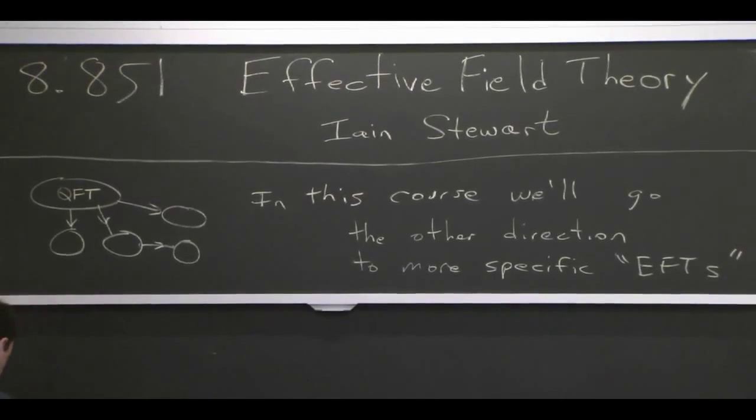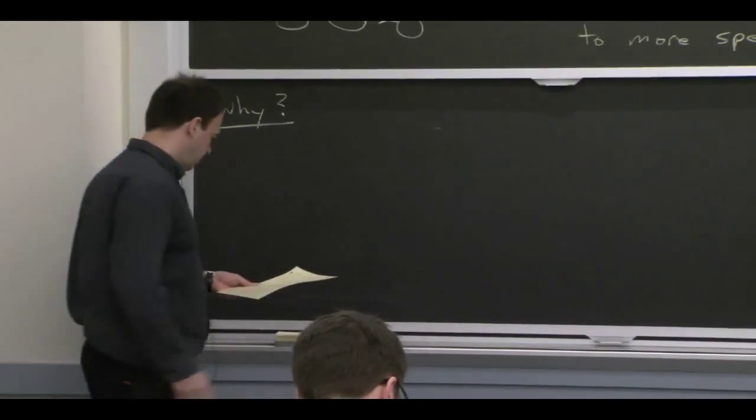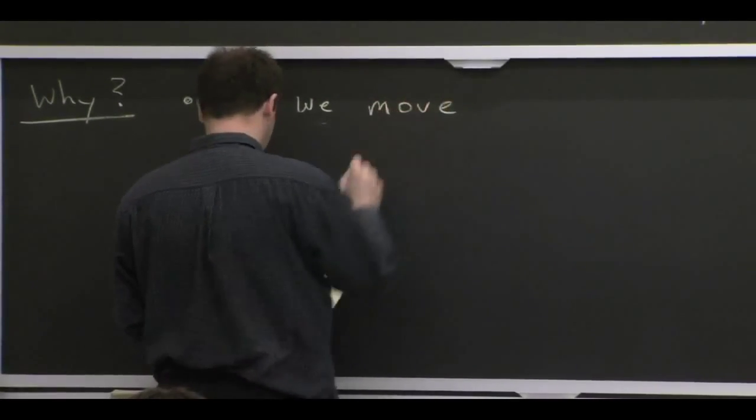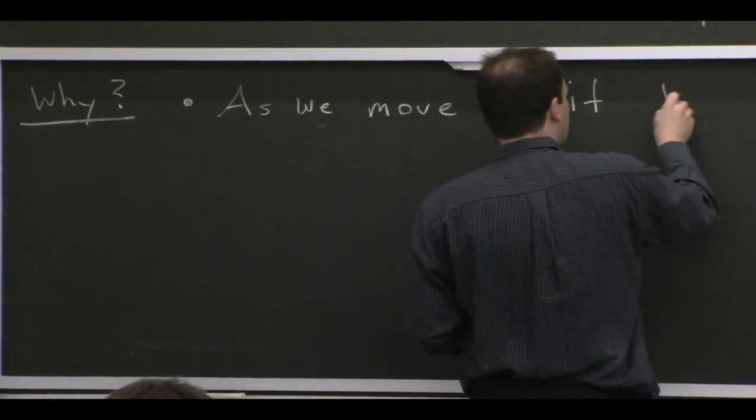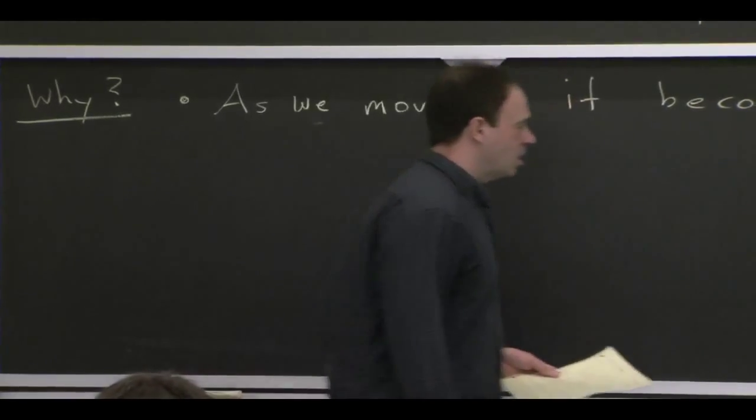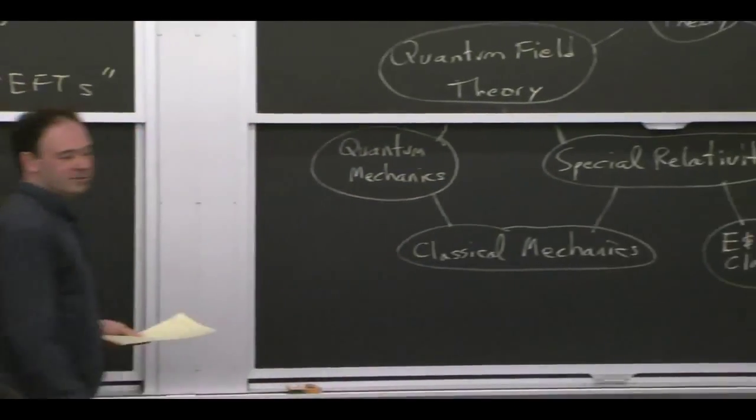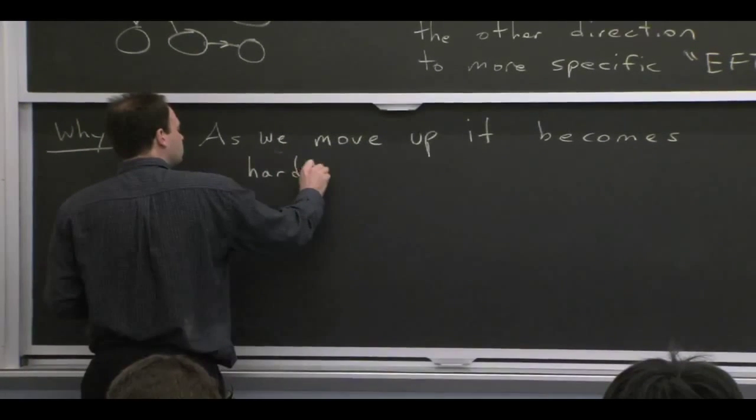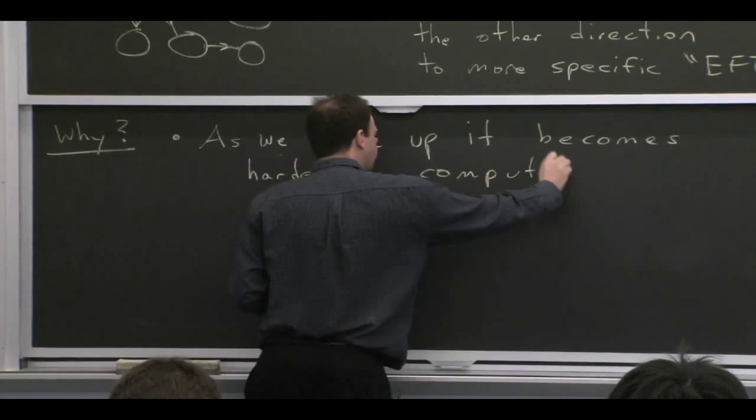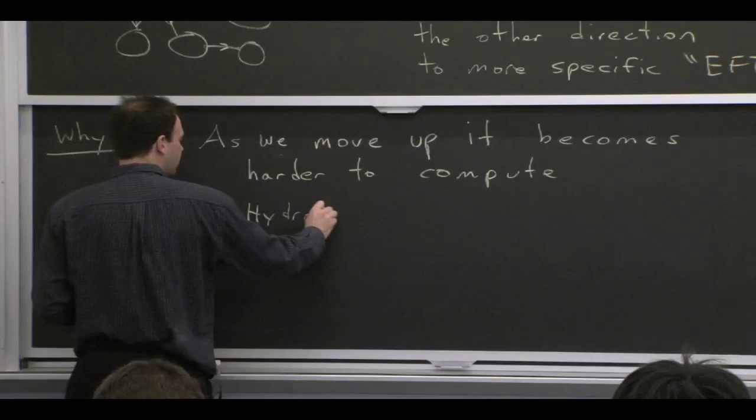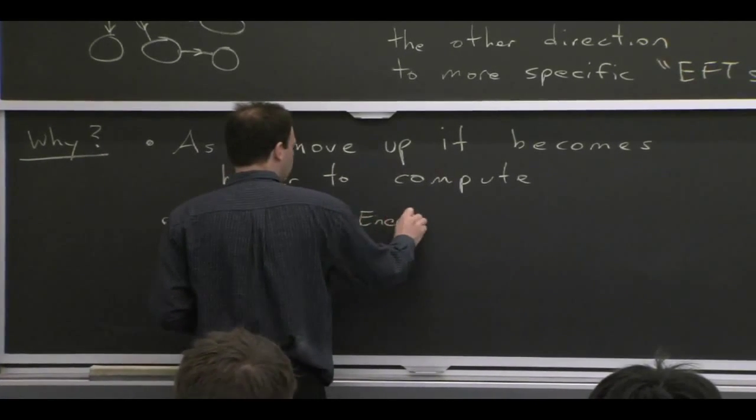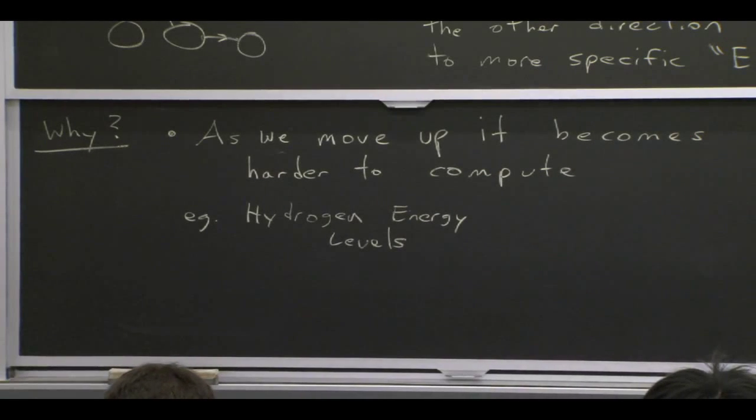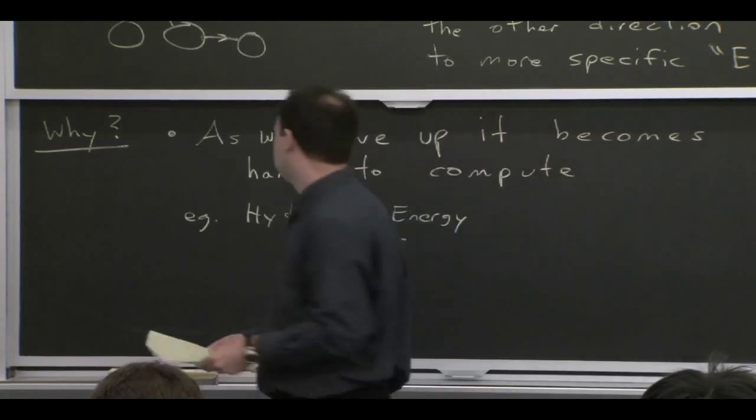So why do we want to do that? There's a couple of different reasons. So as you go up in this chart, it actually becomes, even though you have a more general theory, and it becomes more beautiful, and you can write down the synthesis of physics in fewer lines, it also becomes harder to compute things. So just as an example, if you just wanted to compute the energy spectrum of hydrogen, and you know very well that you can do that in quantum mechanics, and it's a classic example, and fairly easy. If you try to do that in quantum field theory, it's much harder, because quantum field theory, in some sense, has too much for that problem. So that's one example.